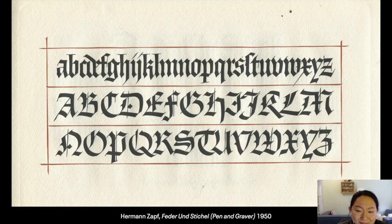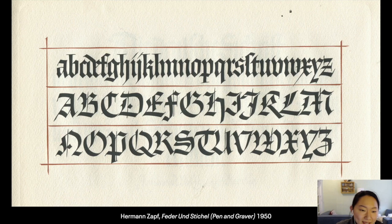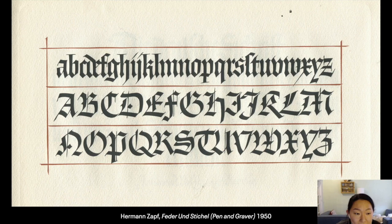Hermann Zapf created this very amazing book called Pen and Graver in 1950 — the same year his typeface Palatino was published — and it really put him on the map. What I find amazing is that he designed all of these quotes when he was in his mid-20s, although it wasn't printed until perhaps seven to ten years later. It was cut by August Rosenberger, whom Hermann Zapf always credits very heavily, because the engravers were the instrumental part of translating a calligrapher's writing into the metal plates for printing.